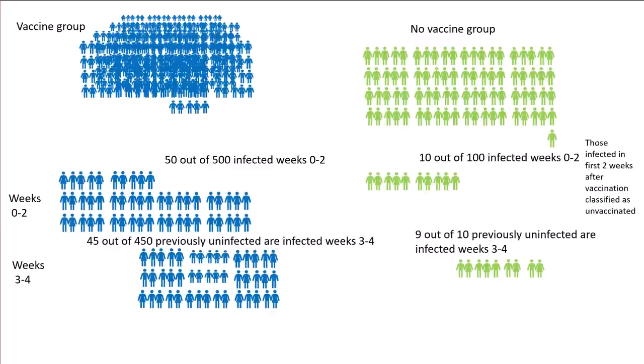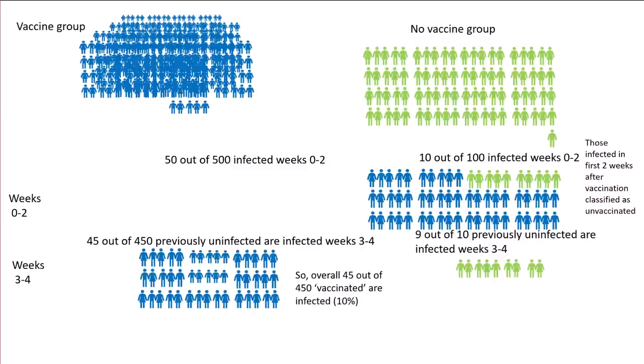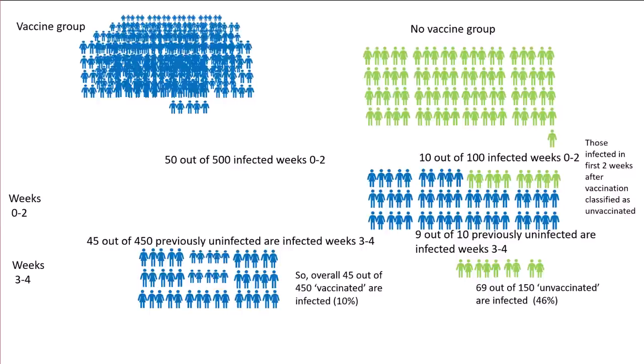Again, those infected in the first two weeks after vaccination are classified as unvaccinated, so they all get moved over. We have 45 out of 450 vaccinated infected — the same 10%. But 69 out of 150 unvaccinated are infected — that's 46%. The efficacy is already up to 78%. And of course, if we only tested a third of the vaccinated, that efficacy would go up even higher.